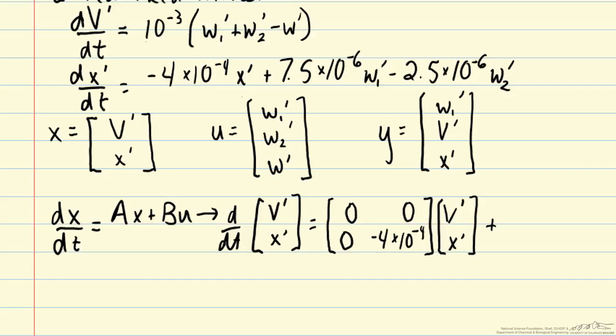Next we need to add on our BU term. We have three elements here in U. So we need to have three columns in B. And if we look at our first row of B we have dV prime/dt multiplies 10 to the minus 3 times W1 prime, 10 to the minus 3 times W2 prime, and minus 10 to the minus 3 W prime.